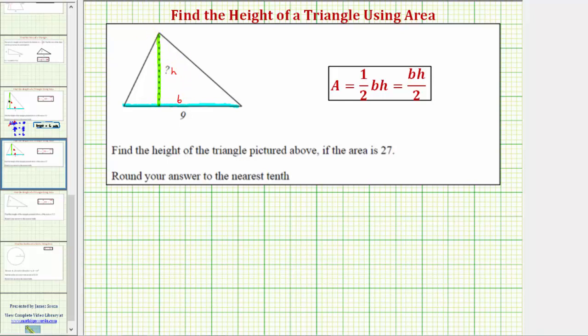And because we know the area is equal to 27 square units, we can use the area formula to set up an equation and solve for H, the height.